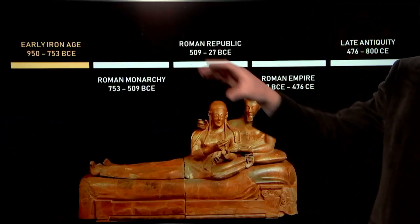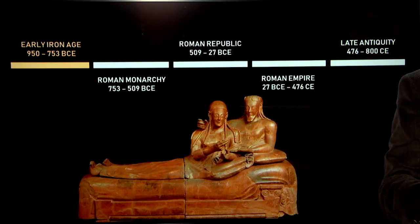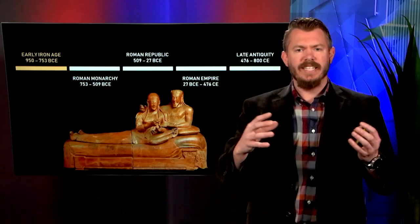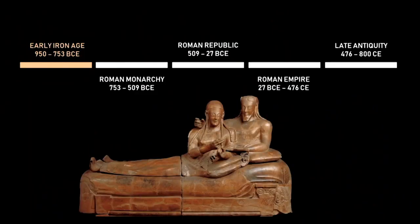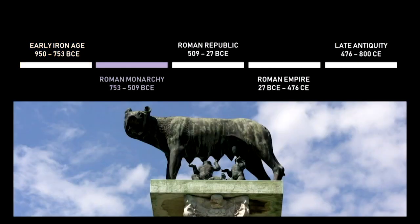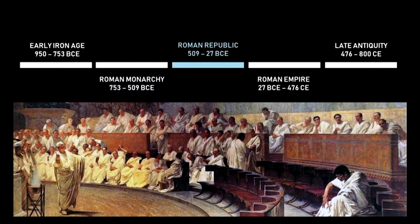It all begins long before the city of Rome was ever founded, back in the early Iron Age, when for hundreds of years the Italian peninsula was comprised of a large diversity of tribes, the most powerful and sophisticated of which were, of course, the Etruscans. Rome itself was founded in 753 BC by Romulus, and for the next 250 years Rome was ruled by a series of seven kings.